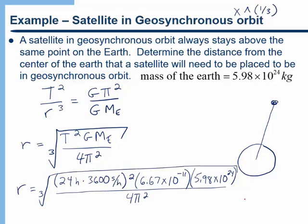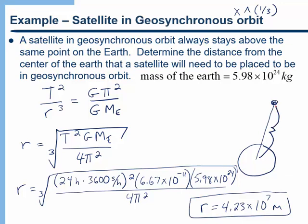When you calculate that, what you should end up with is that r is equal to 4.23×10⁷ meters. So that is the distance from the center of the earth that you need to place a satellite if you want it to be in geosynchronous orbit.